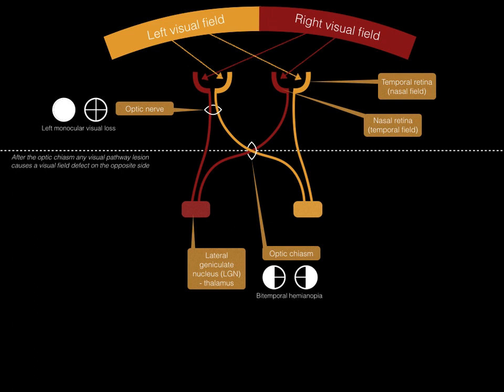The second important concept of the visual pathway is that after the chiasm, a lesion of the visual pathway will cause a visual field defect on the opposite side. So a lesion affecting the left visual pathway will cause a right visual field defect, whilst a lesion affecting the superior fibres will result in an inferior visual field defect. The next structure is that which extends from the optic chiasm to the LGN on each side — this is called the optic tract.